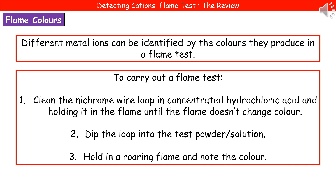Once we've cleaned the loop, we dip it into our test solution. If it's a powder, you need to moisten the loop first with a drop of distilled water, then dip it into the powder. Once we've got our solution or powder on the loop, hold it in a roaring flame and note the colour at which it burns.